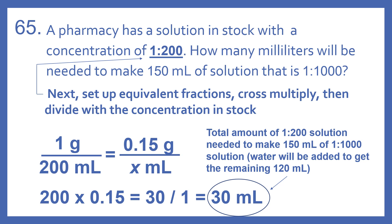Now we're going to set up equivalent fractions, cross multiply, and divide with the concentration in stock. So we have 1 gram per 200 milliliters — that's our concentration in stock — and we need 0.15 grams per X milliliters. So we have 200 times 0.15, that equals 30, divided by 1, equals 30 milliliters. The total amount of 1 to 200 solution needed to make 150 milliliters of the 1 to 1000 solution is 30 milliliters.